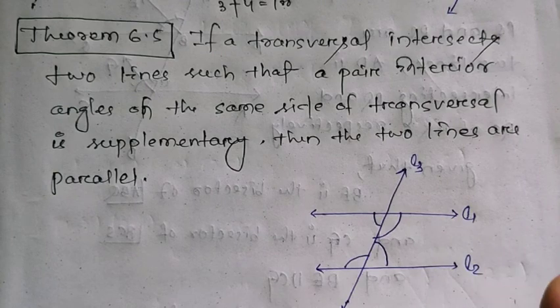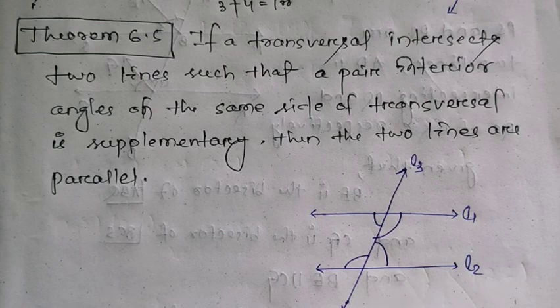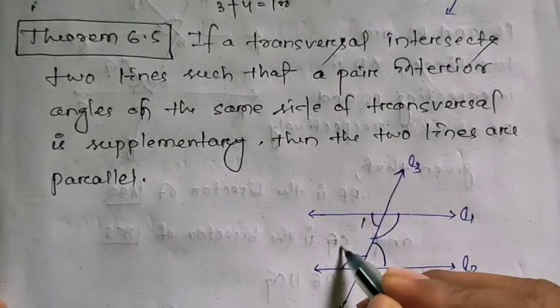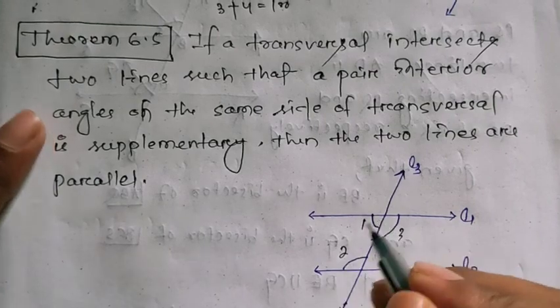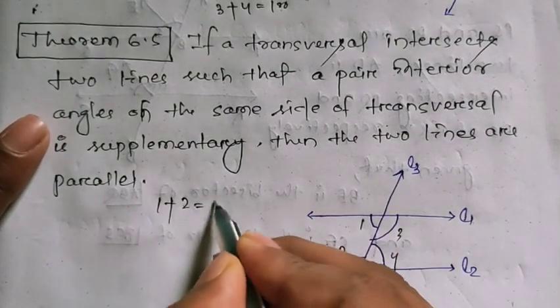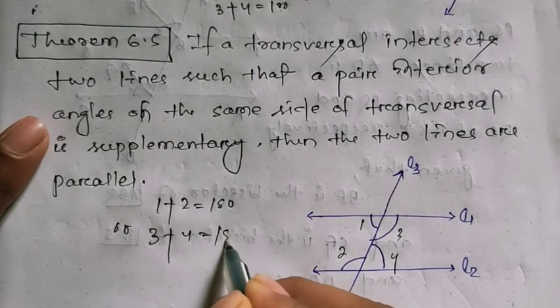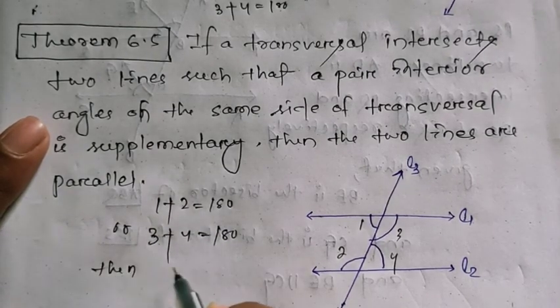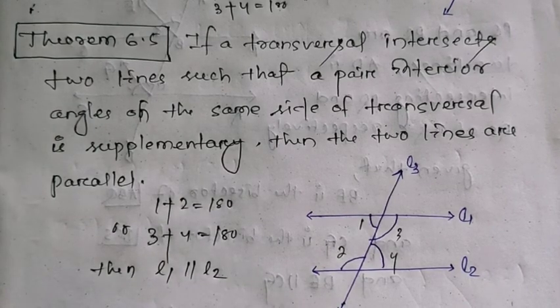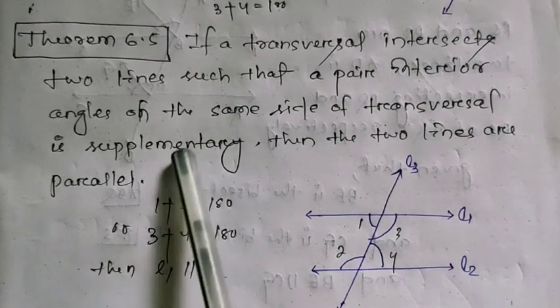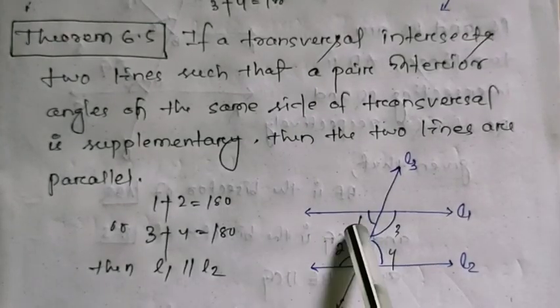Theorem 6.6 states that lines which are parallel to the same line are parallel to each other. If L1 is parallel to L2 and L2 is parallel to L3, then L1 is parallel to L3. We will see the application of this.